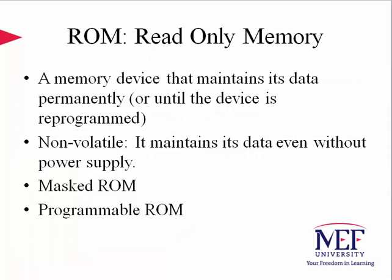A ROM is a memory device that maintains its data permanently until the device is reprogrammed. Masked ROM is a ROM type which must be programmed by the manufacturer, whereas the programmable ROM can be programmed many times and erased if needed, and is solely under a user's control. We'll have more discussions on that in a bit.